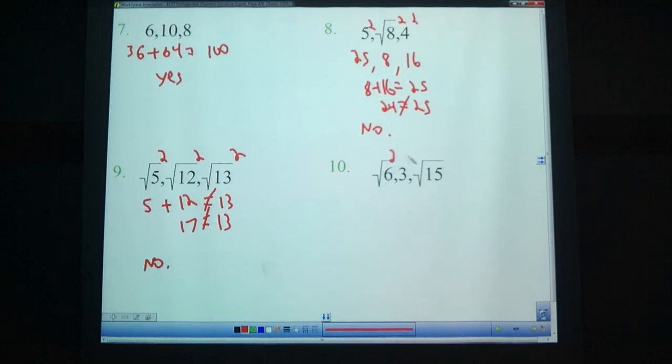This one here. Square all three. That's why I like the method of square all three, is that if you're ever unsure of the order, you can then see what they are. So square root of 6 squared is 6. 3 squared is 9. Square root of 15 squared is 15. 6 plus 9 does equal 15. So this is a yes.